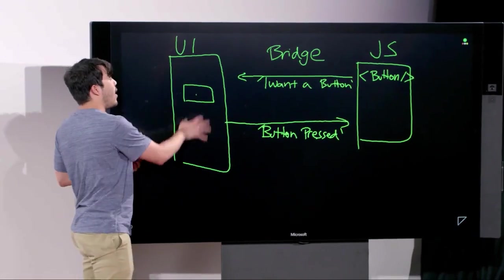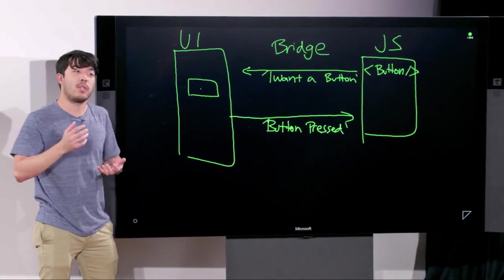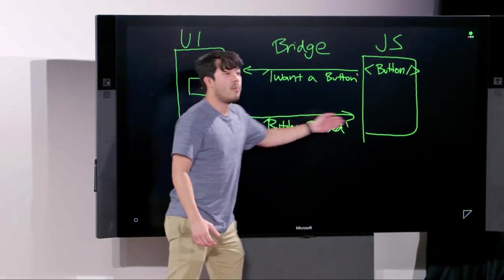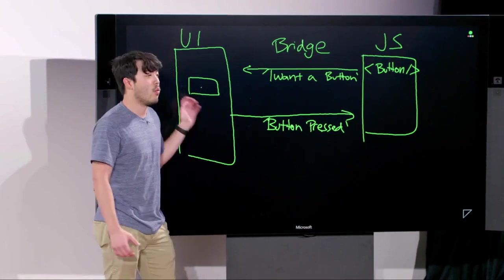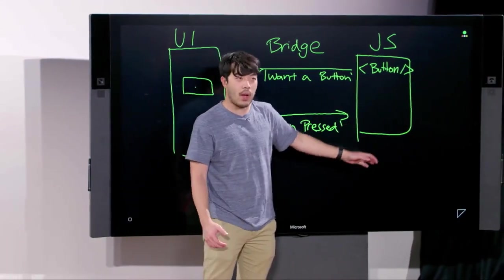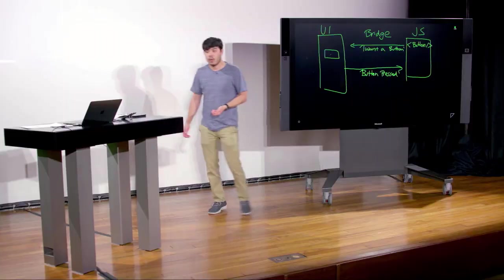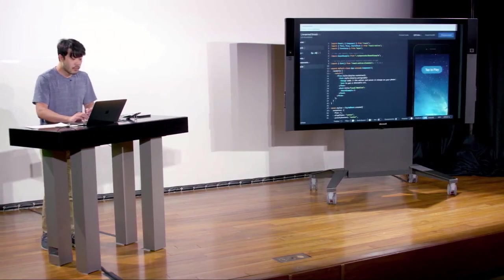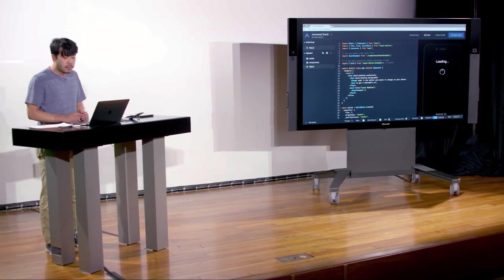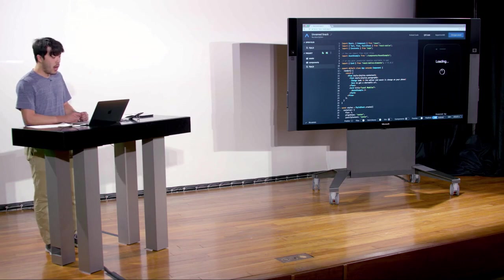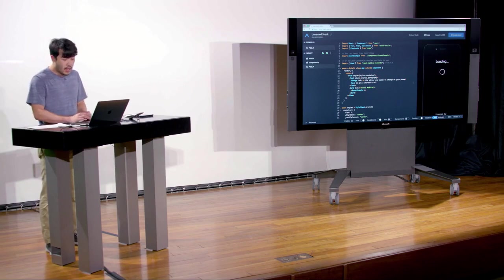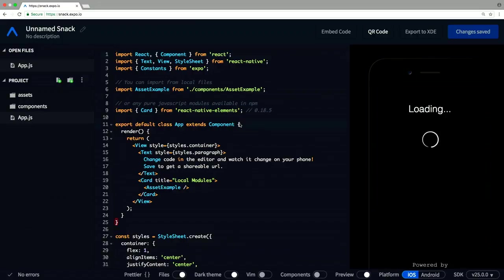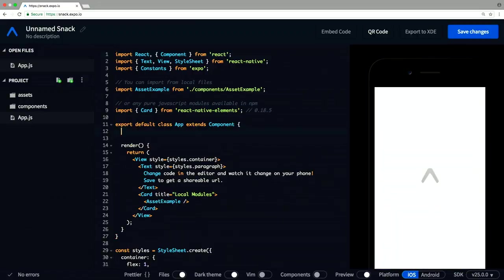Conversely, when you touch something on the UI, the JavaScript doesn't know until the bridge says, hey, this button was pressed. Let's see an example where we can lock up the JavaScript thread without locking up the UI. Here we are in Snack — snack.expo.io — which allows us to run React Native and have it all happen in the browser. A few lectures ago we wrote this blocking method that basically locks up the JavaScript thread, so we can go ahead and do that again.